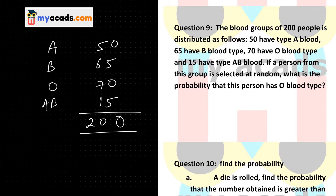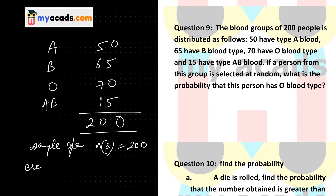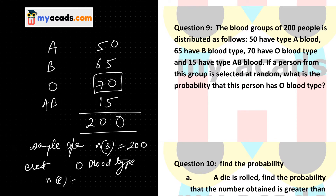If a person from this group is selected at random, what is the probability that this person has O blood type? My sample space has 200 elements, so NS is 200. The event is O blood type, and 70 people have O blood type, so NE is 70.